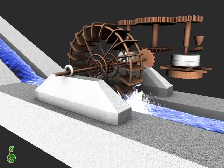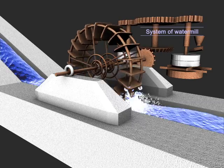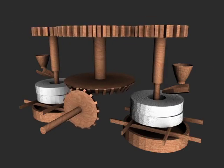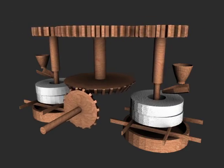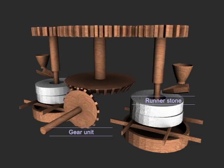Often, waterwheels provided power for watermills, which used millstones for grinding wheat to produce flour. The rotational movement of the waterwheel spun the runner stone of the mill by means of a gear unit.